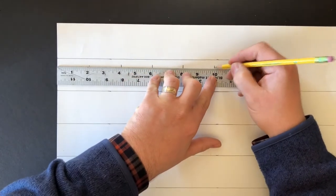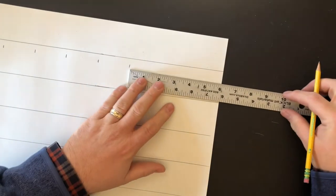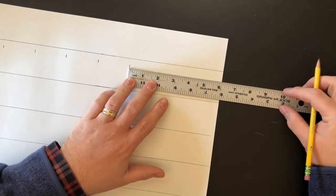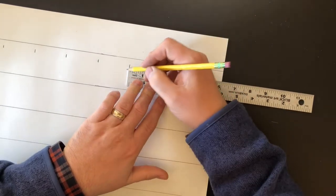Ten, and the edge of my ruler is 12. Now I'm taking my ruler, putting it all the way to the bottom, line it up with that 12-inch mark that I just made. Edge of my ruler, go to four.